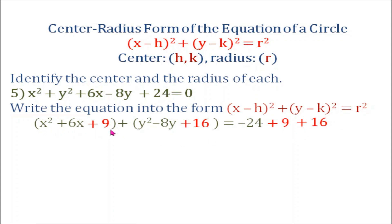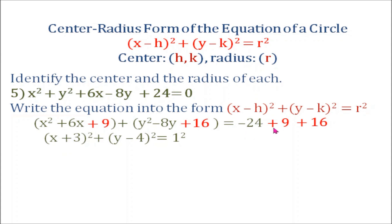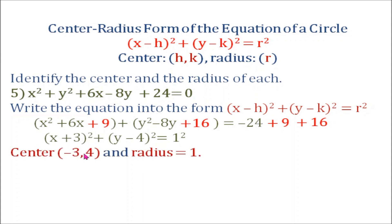Since we have completed the square, x squared plus 6x plus 9 can be written as the quantity x plus 3 squared, and y squared minus 8y plus 16 can be written as the quantity y minus 4 squared. Negative 24 plus 9 plus 16 equals 1, and 1 can be written as 1 squared. The coordinates of our center are h and k: negative 3 and positive 4, and the radius is 1.